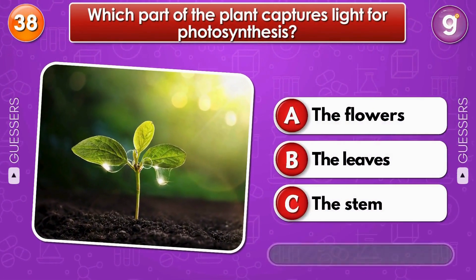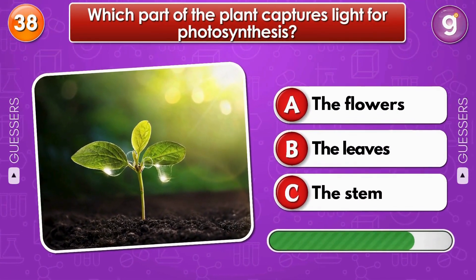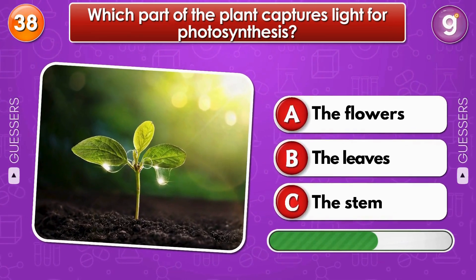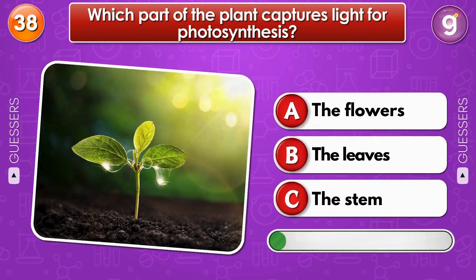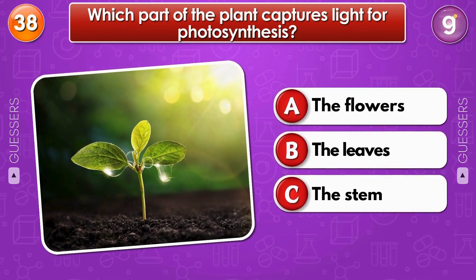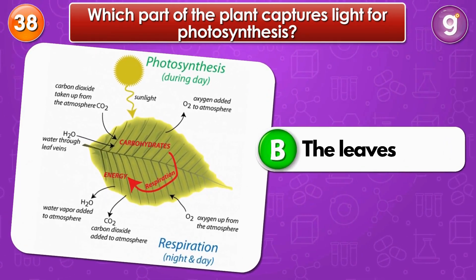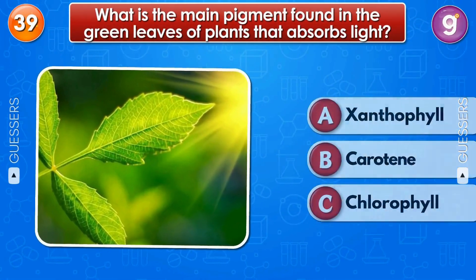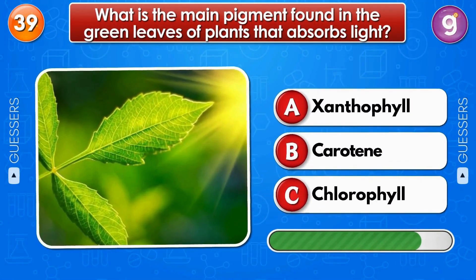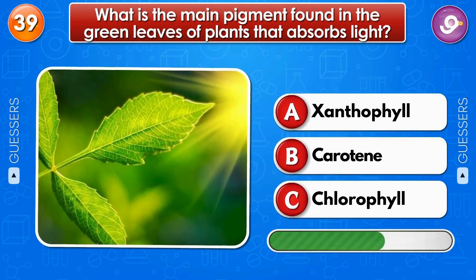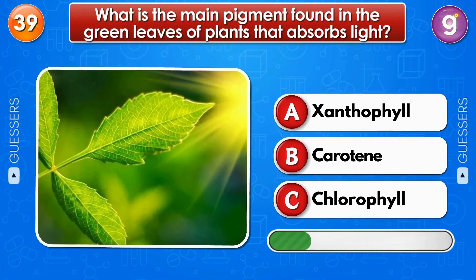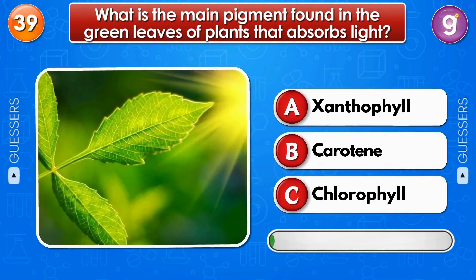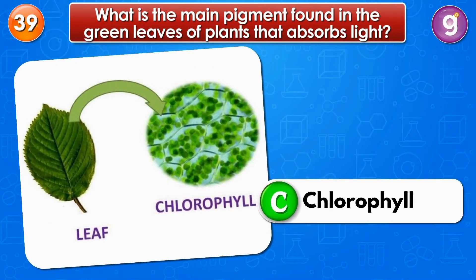Which part of the plant captures light for photosynthesis? The leaves. What is the main pigment found in the green leaves of plants that absorbs light? Chlorophyll.